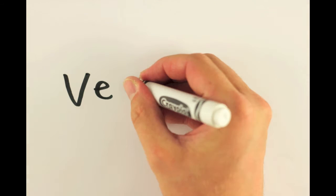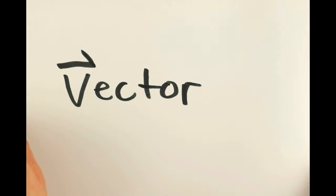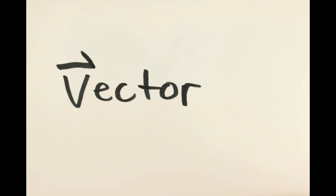One final thing I'll mention before I let you go. We like to write vectors with a little arrow over the top. So velocity will have a V with an arrow on top, whereas speed would just have a V without an arrow.